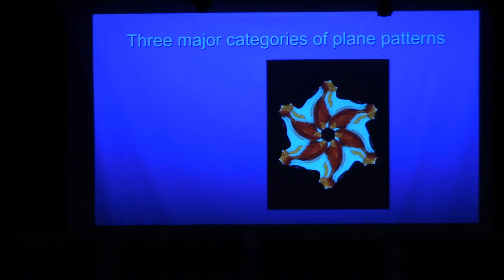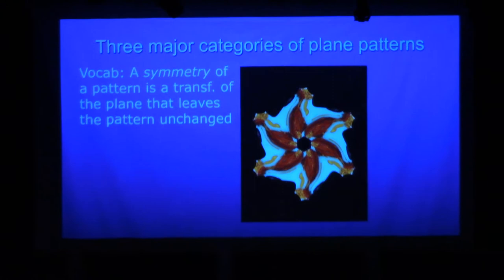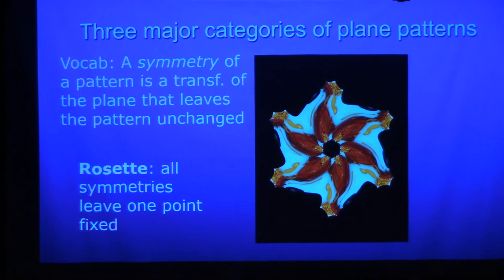So I want to quickly go over the three major categories of plane patterns, but I need some vocabulary. I need the word symmetry. For me, a symmetry is a transformation of the plane so that when you transform the plane, the pattern remains unchanged. That is a symmetry of this pattern.